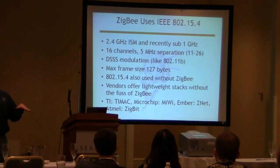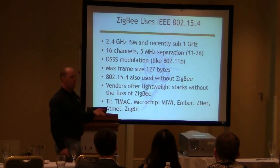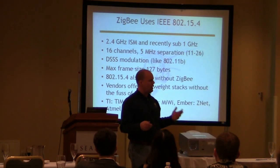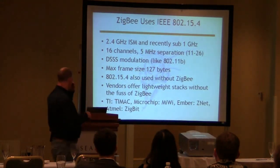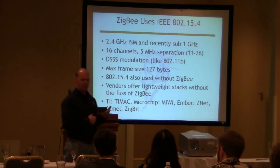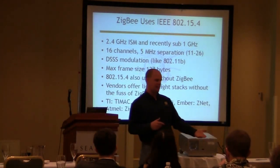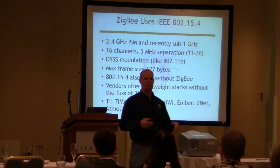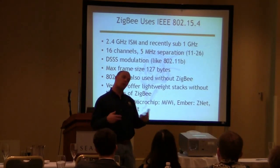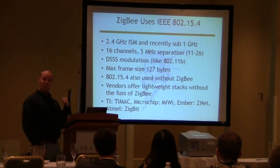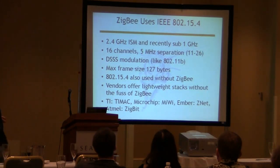Underneath the hood in Zigbee is the IEEE 802.15.4 protocol. 802.15.4 is used in many other areas as well, but it's the underlying mechanism. One nice thing about 802.15.4 is that it's based on DSSS, like 802.11b networks. What does that mean? It's really easy to sniff. As was said in the last presentation, Bluetooth is hard to sniff, Wi-Fi is very easy to sniff — and similarly, Zigbee is very easy to sniff.